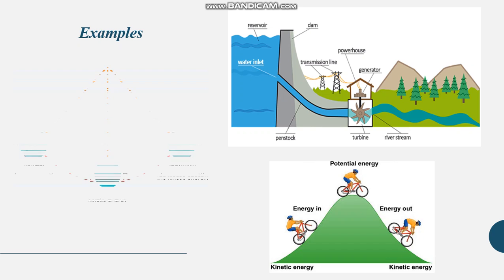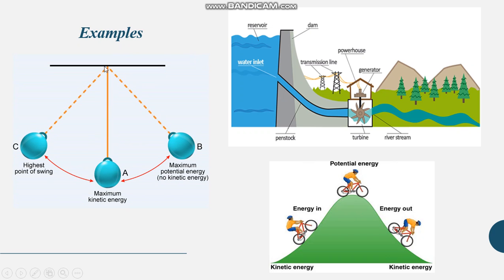The next important example is of a simple pendulum. In this experiment, a string is attached with a pendulum bob and we make the pendulum swing. Point B is the maximum position on one side, and point C is the maximum position on the opposite side. Point A is the centre position.